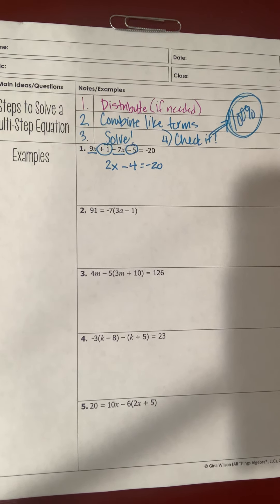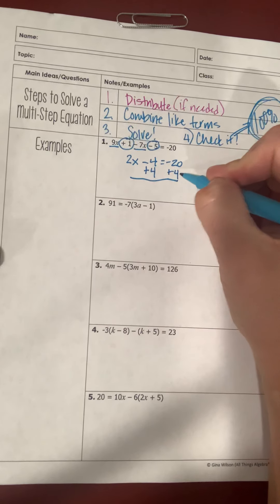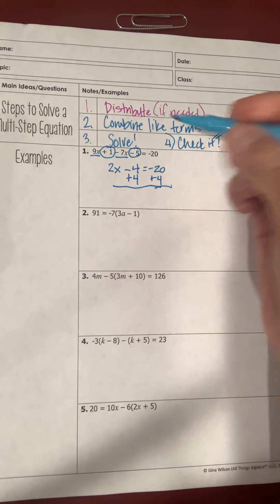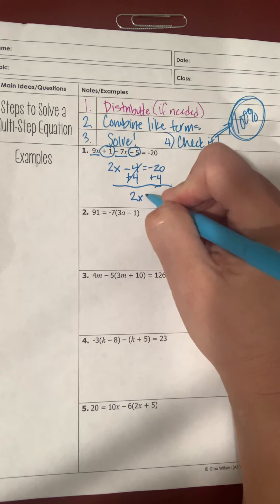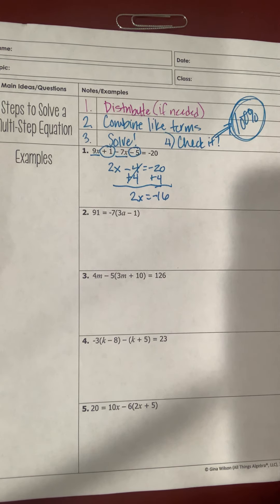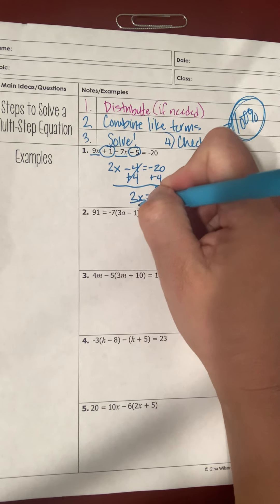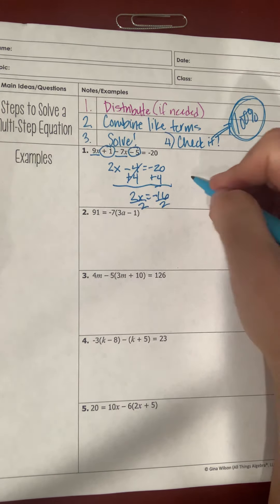Now it's a basic two-step equation. I need to get x by itself, so I use the additive inverse by adding 4 on both sides. The negative 4 and 4 cancel, leaving 2x equals negative 16. Then I divide both sides by 2 and get x equals negative 8.